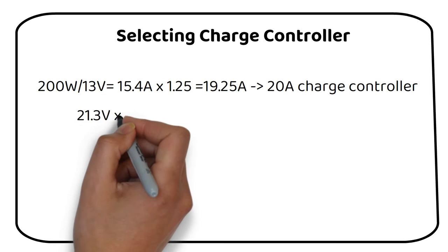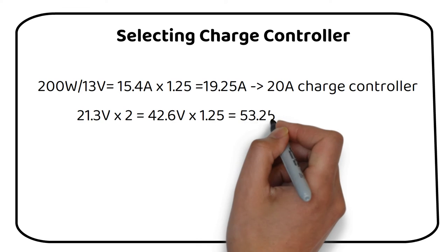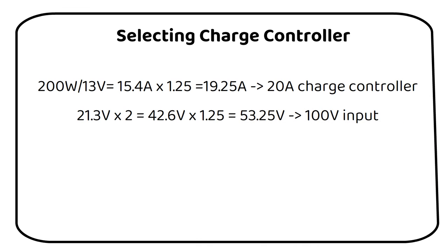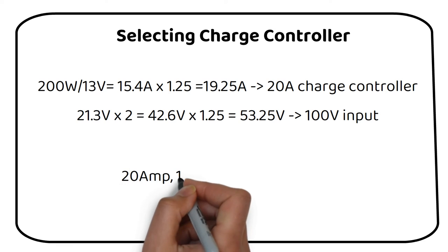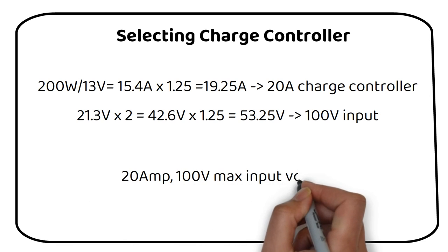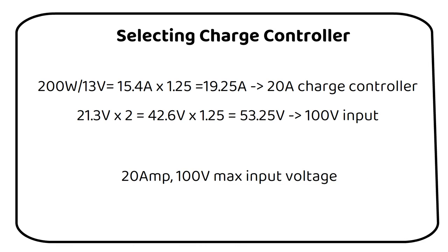The total voltage of the two panels is 42.6 volts. We also have to multiply this by a safety factor of 1.25 to become 53.25 volts. This is under 100 volts. Combining these two values we can select a charge controller that is 20 amps with a maximum input voltage of 100 volts.